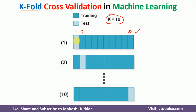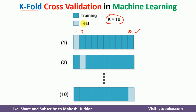In each and every iteration, one fold is considered for testing and the remaining 9 folds are considered for training. In the first iteration, the first fold is used for testing and the remaining 9 folds are used for training. Similarly, in the second iteration, the second fold is used for testing and the remaining 9 folds are used for training. The same thing is followed in all 10 iterations. Then we take the average of the performance, and that average is considered the final performance of the model.